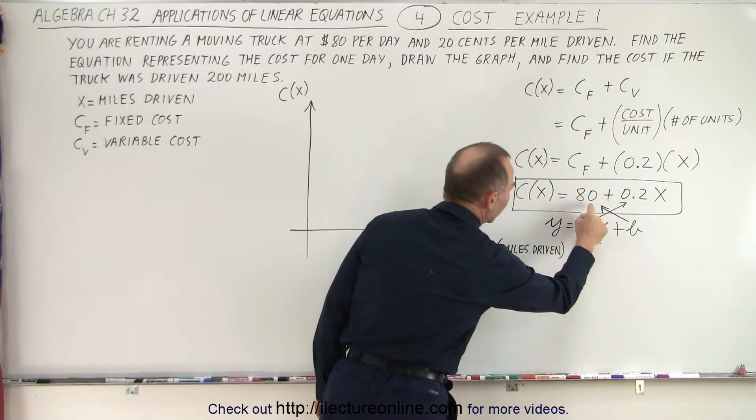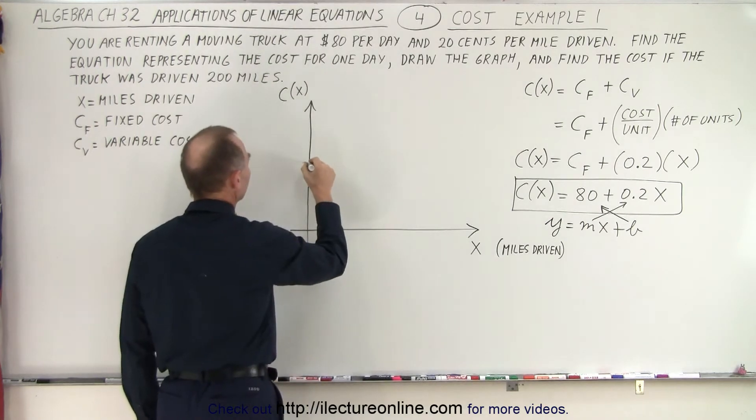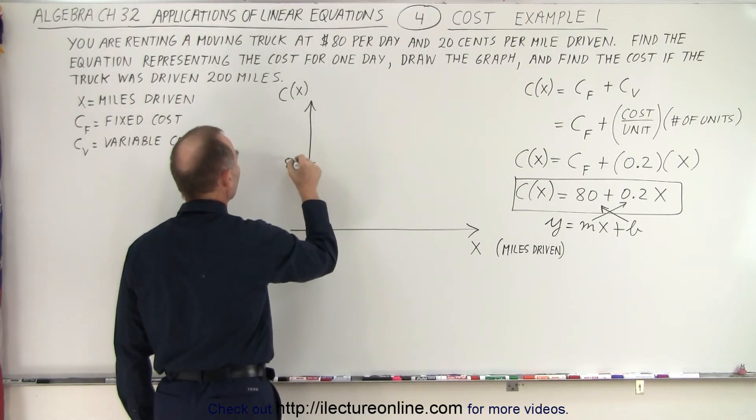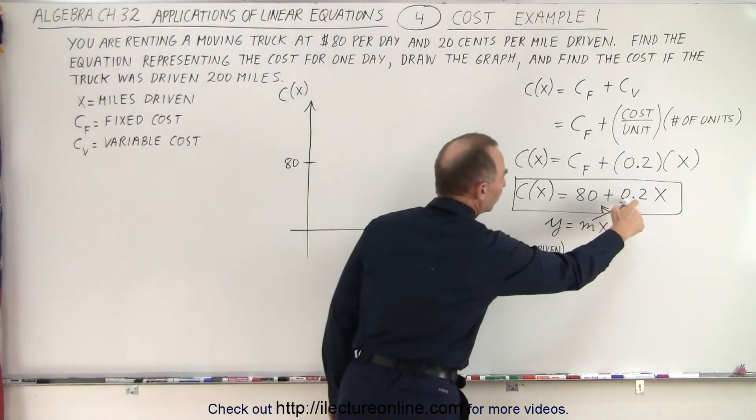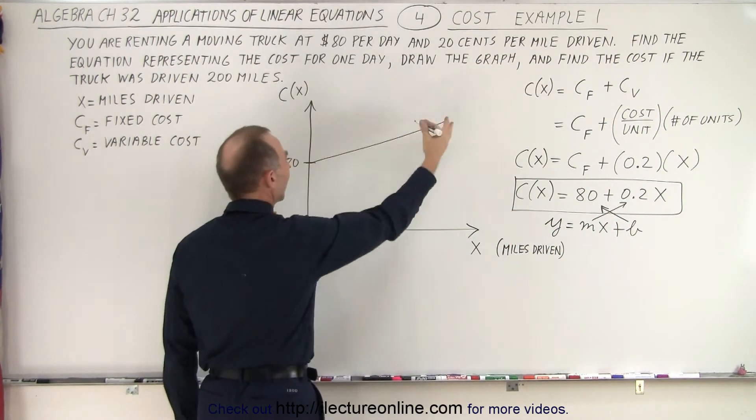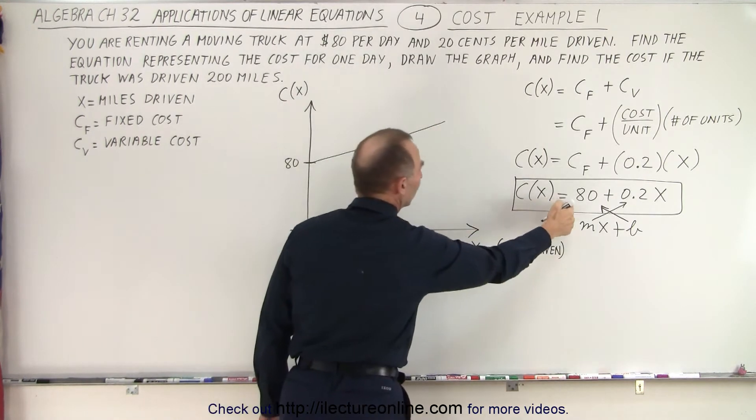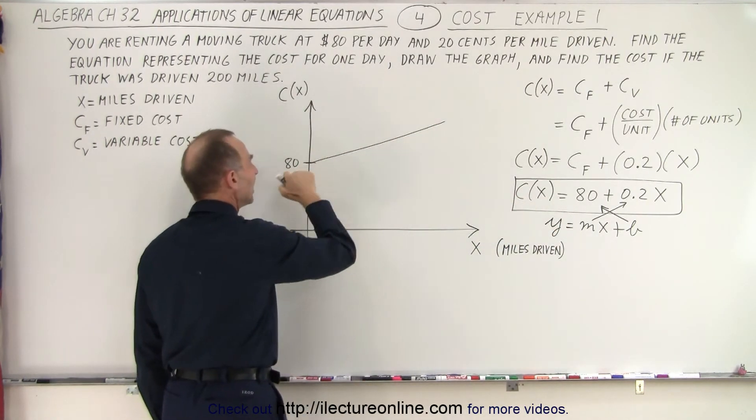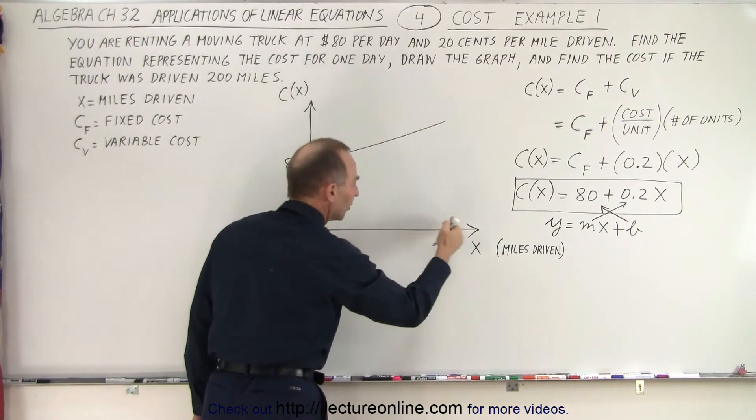So in this case, we're going to find the intercept b, which is 80. So we come up here. So we call that the intercept 80. And then the slope is 0.2x. So the slope is a slight positive slope like this. And so this line represents this equation where we have the fixed cost of 80. And then as the number of miles are driven, it increases.